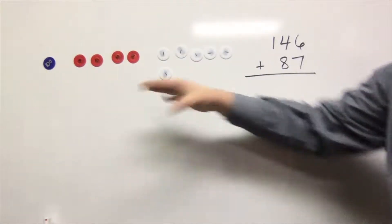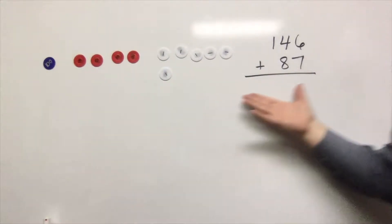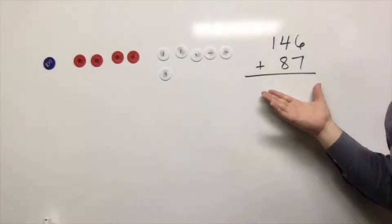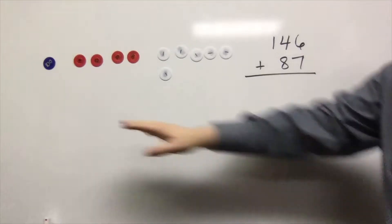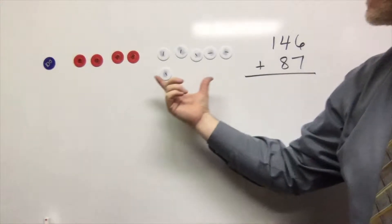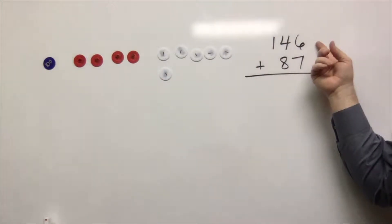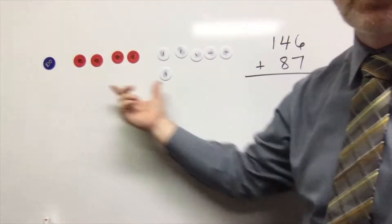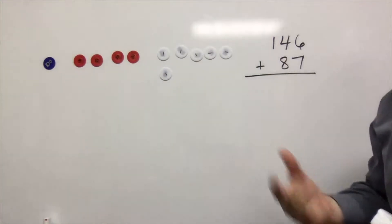Suppose I wanted to use these place value disks to represent the problem 146 plus 87. Here's our original 146—I said 147, I meant 146—and now I want to add in 87.